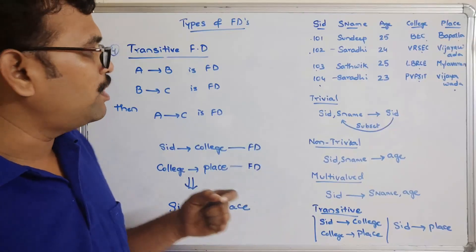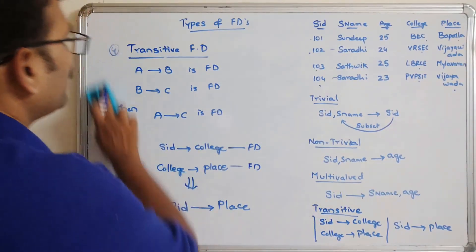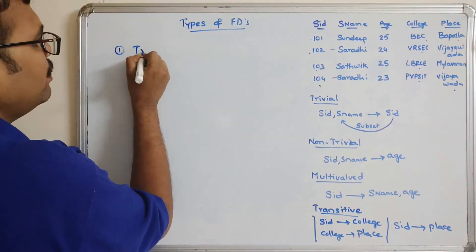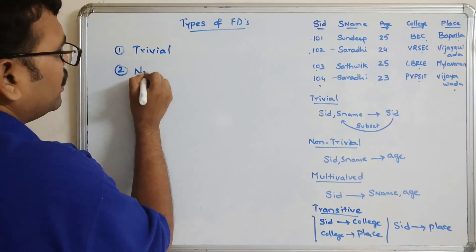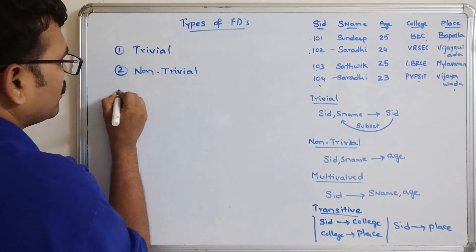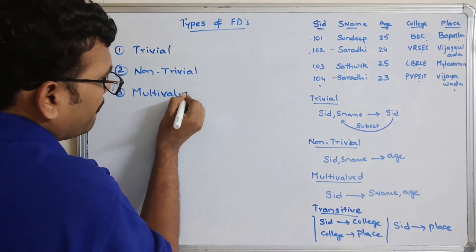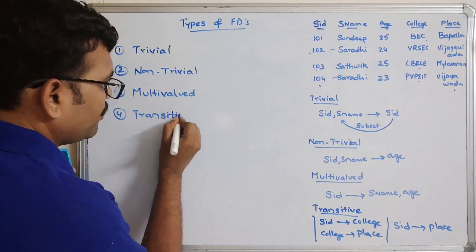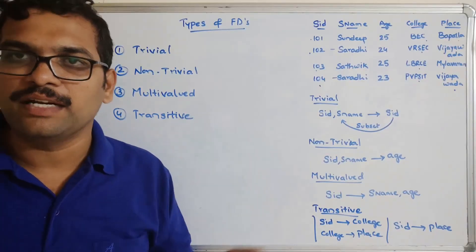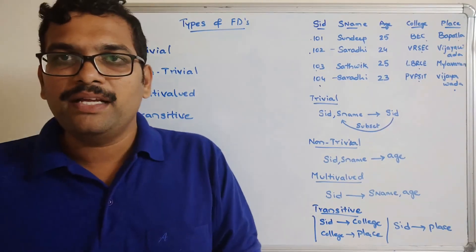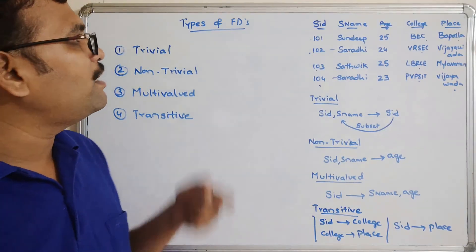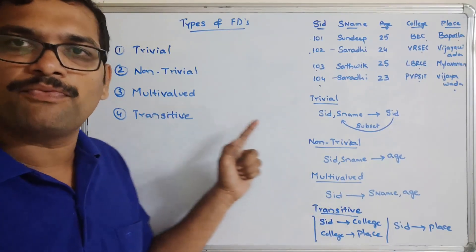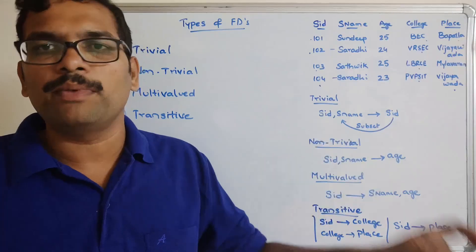So these are the different types of functional dependencies — trivial, non-trivial, multi-valued, and transitive. These are the base for normalization. If you understand clearly about functional dependencies, their properties, rules, and types, then it will be very easy to understand the normalization process.